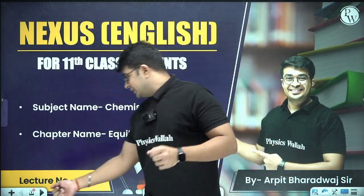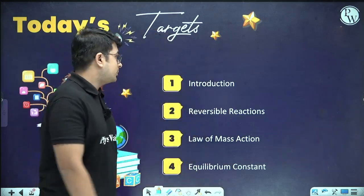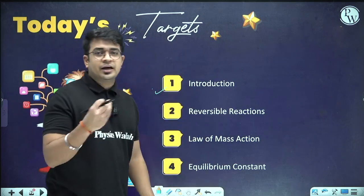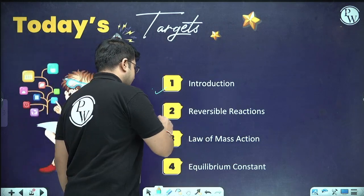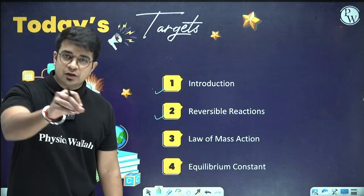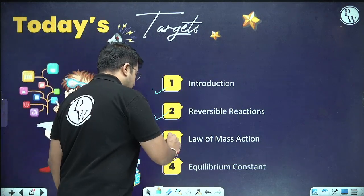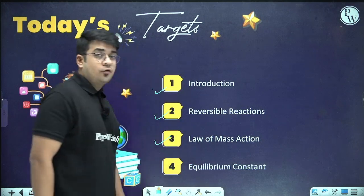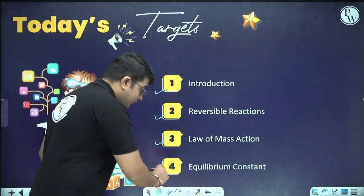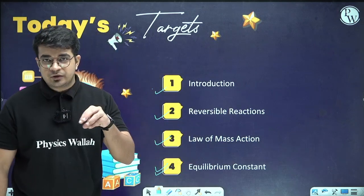In this first session I am going to cover the basic introduction — what is the state of equilibrium — then reversible and irreversible reactions where equilibrium is observed, followed by the law of mass action, which is very important for calculating the equilibrium constant, our last topic today.